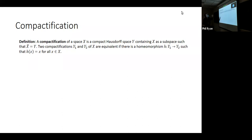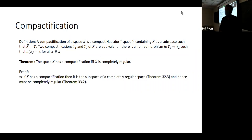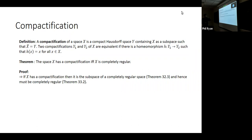A compactification of a space X is a compact Hausdorff space Y that has X as a subspace such that the closure of X equals Y. Two compactifications are equivalent if we have a homeomorphism between them that is the identity on the thing being compactified. It's very easy to see that a space has a compactification if and only if it's completely regular.